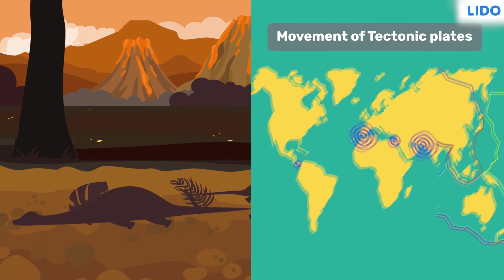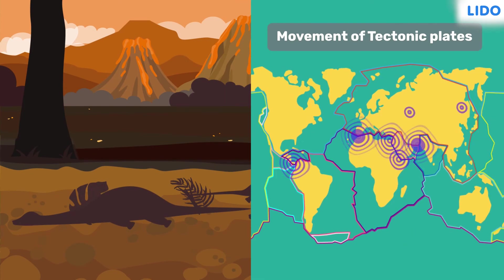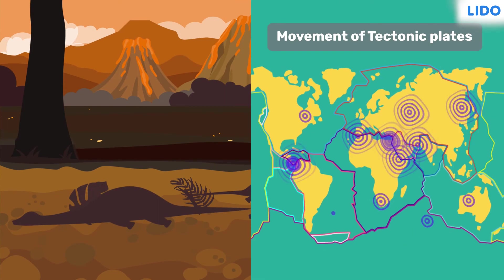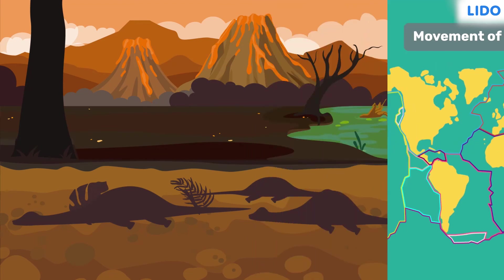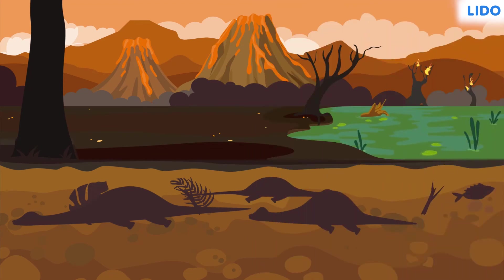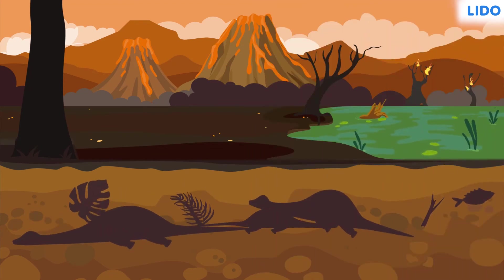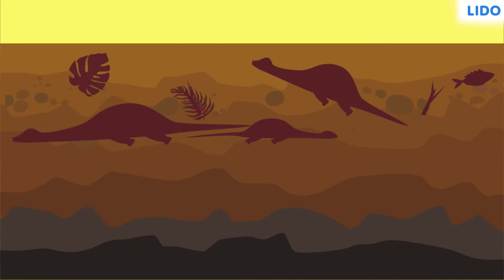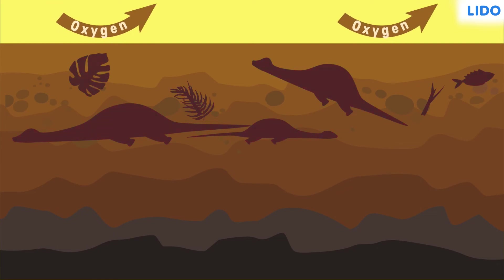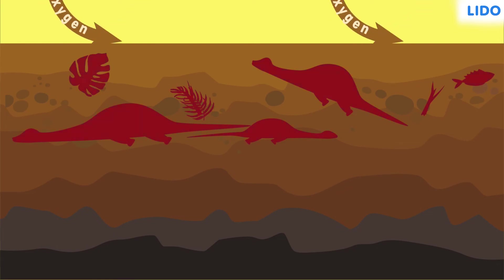There were mighty earthquakes because of the movement of tectonic plates. This movement caused the remains of plants to get buried deeper and deeper. The accumulation of debris cut off the supply of oxygen to these dead and decaying matter.